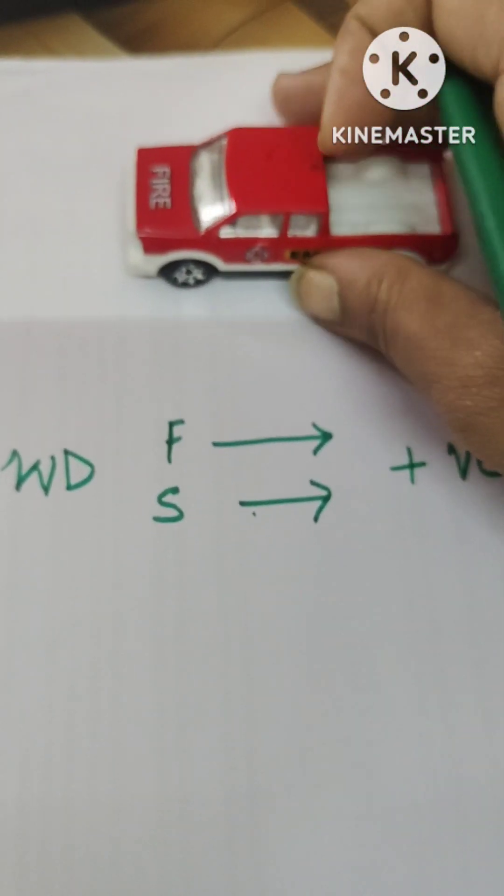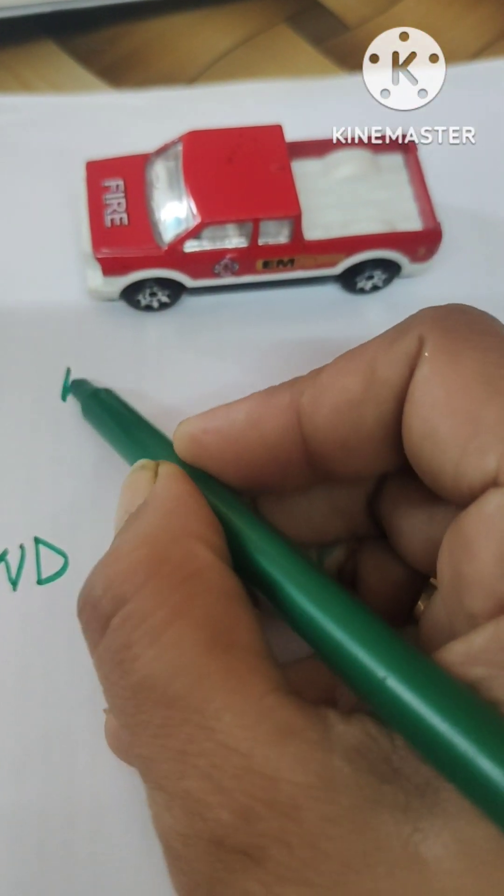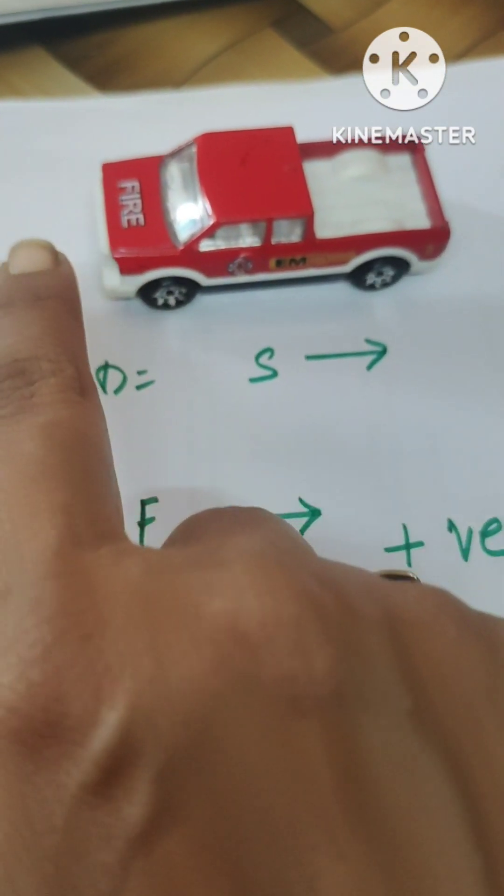Let's take a car again and again I am pushing the car towards this side. So in this case, let's see the work done. So displacement is towards this side because I am shifting towards this side.